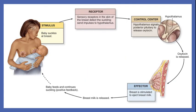Breastfeeding is another good example of positive feedback. When the baby suckles, it causes the nerves to tell the brain to release oxytocin, which releases more milk. The baby drinks the milk and suckles some more. The receptors once again get a stimulus, which goes to the brain and releases more oxytocin. As the baby suckles, the body produces more milk. This one is a little different though, because it stops when the baby stops suckling.